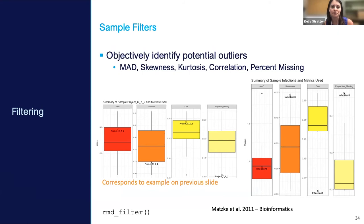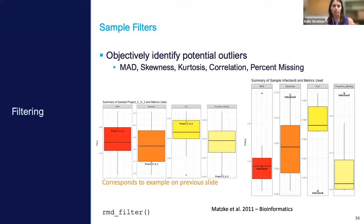A question was asked about whether it's valid to use the same filtering thresholds on different testing groups — whether we're dealing with intra-group versus inter-group variance. The samples from different treatment groups are all in the same dataset, and filters operate at the dataset level. You wouldn't filter samples from one group differently from another, or apply different thresholds to biomolecules observed in different groups.